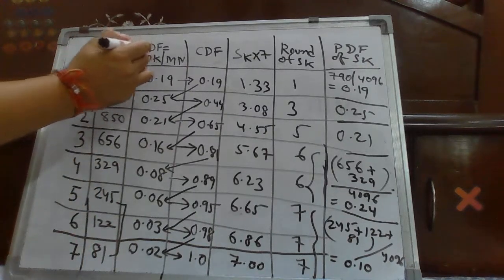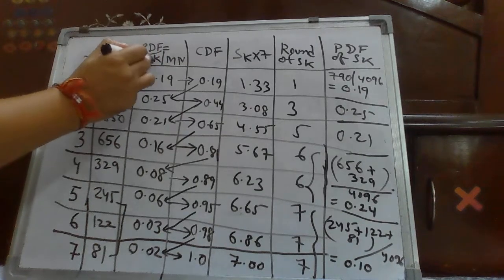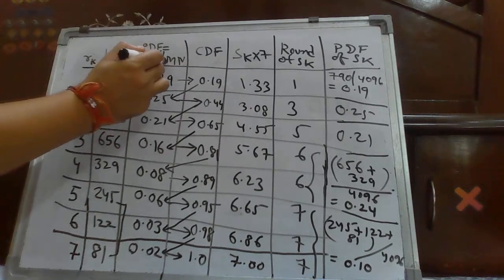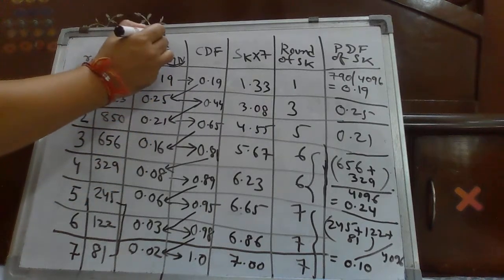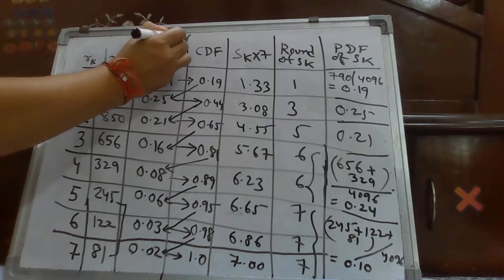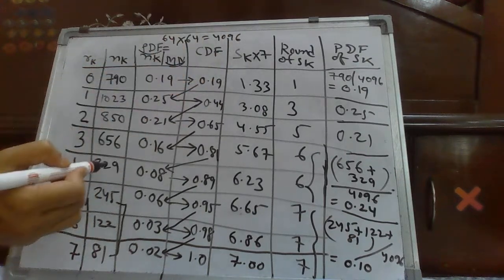Now, we will calculate about probability density function. What is the formula of PDF? NK over M into N. M into N is nothing, it is basically size of my image. What is the total size of my image? That was 64 into 64. So, that gives how many number of pixels? 4096.